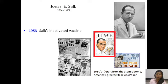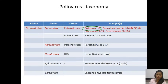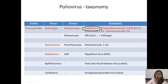Salk developed the first vaccine for polio, followed by Sabin's oral polio vaccine. Regarding taxonomy, these viruses from the Picornaviridae family belong to the genus Enterovirus, which contains poliovirus types 1, 2, and 3. Also within the genus are rhinoviruses — the most common cause of rhinitis — of which hundreds exist. There are other genera within this family.